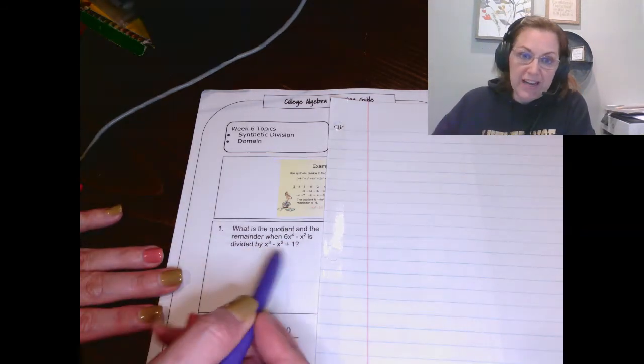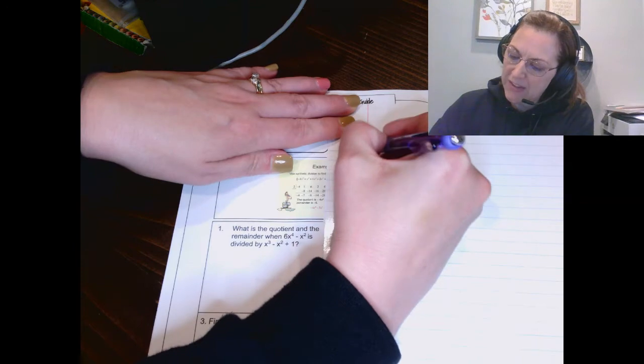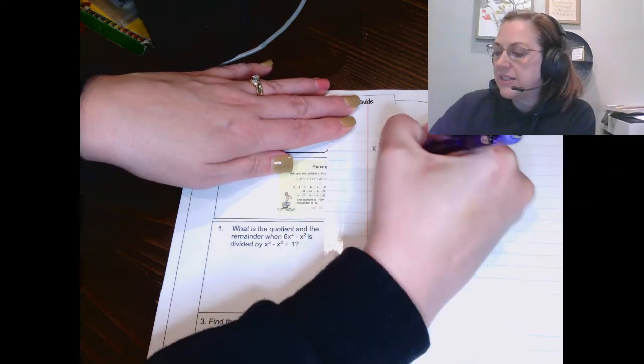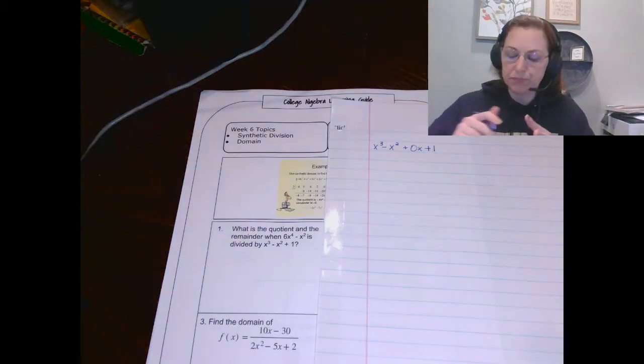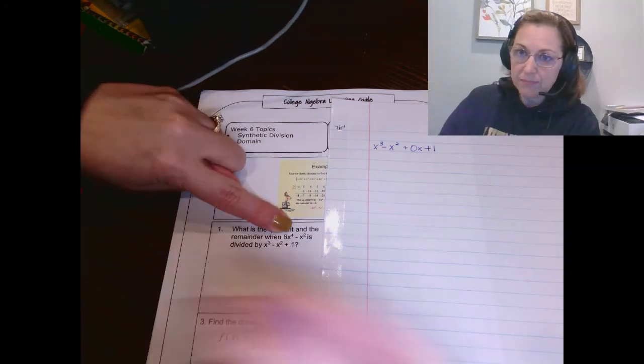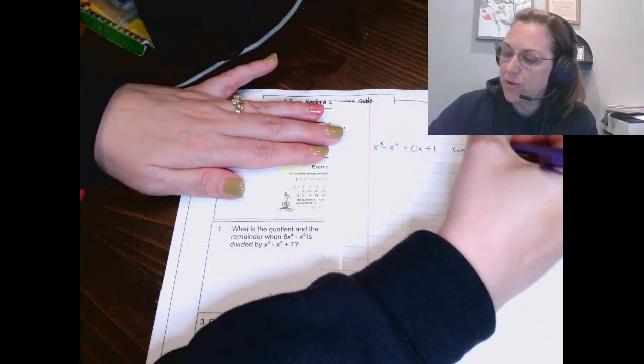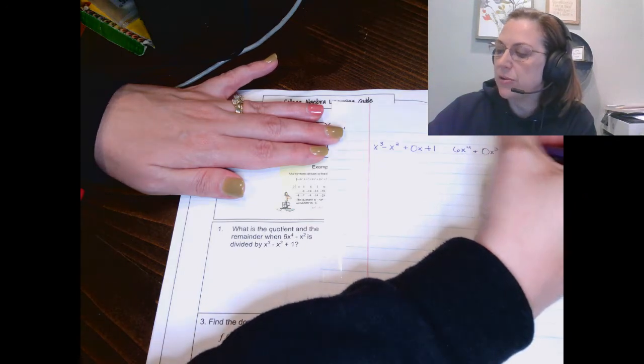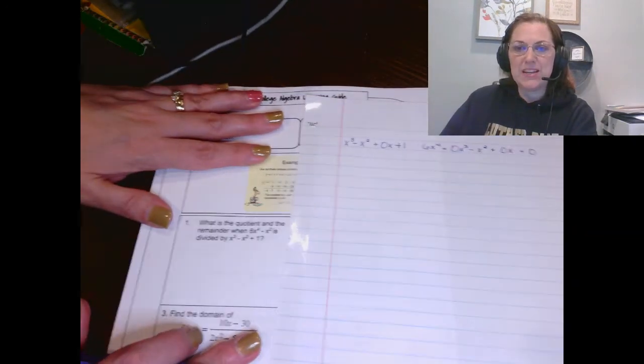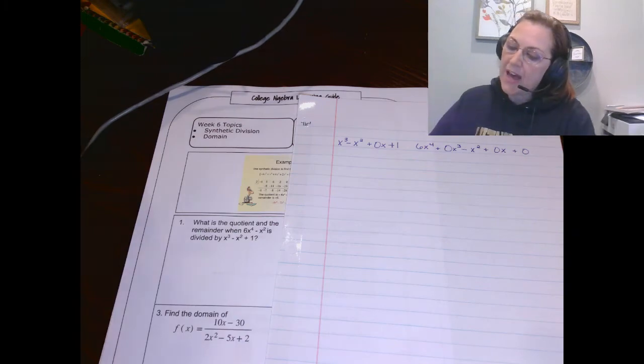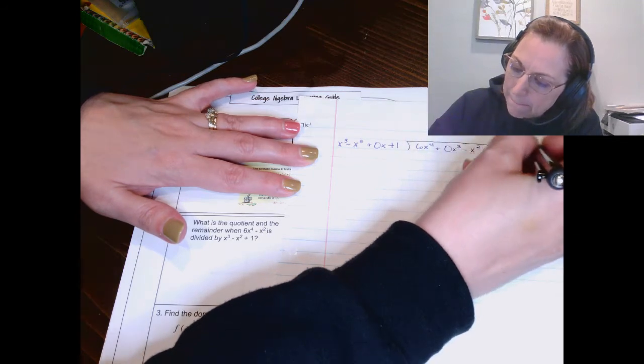So when we put our divisor, we're going to put it just like we would in regular numerical division. We're going to put it on the outside. Now you're also going to see that I'm going to put a zero X term in there. The reason I do that is to be a placeholder. And then I'm going to put my dividend inside the house like division symbol that we are familiar with from numerical division. But I want you to see that I also am putting placeholders so that we can do the division properly. Now the house part looks something like that.